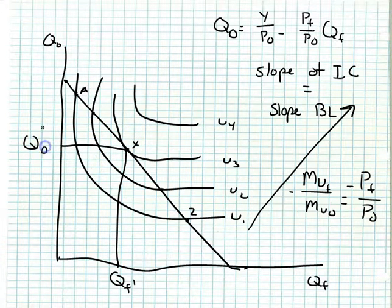They cannot attain this higher level of utility on U4. They can be at a higher level of utility and still exhaust all of their income than they are on U1.